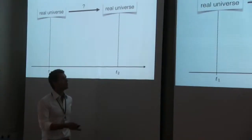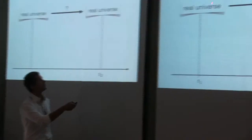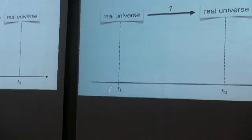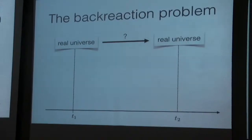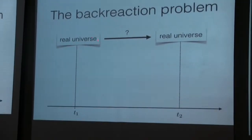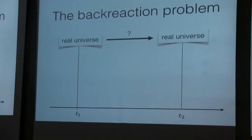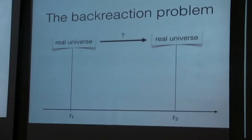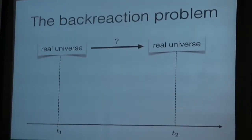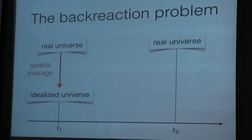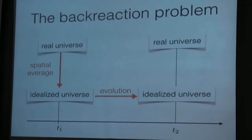The procedure we would like to do in cosmology is to start from and know the time evolution of the real universe. But this is very hard because we have too many degrees of freedom — we're not able to solve the field equations for the complete universe. So we have to rely on models, simplifications, and assumptions. What we do is spatially average the real universe to get an idealized universe modeled by the FLRW geometry.